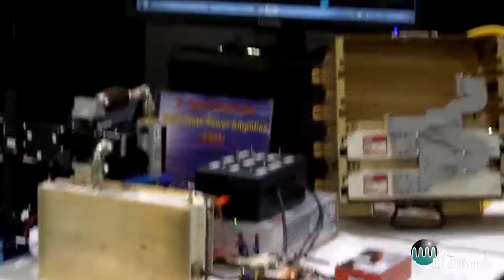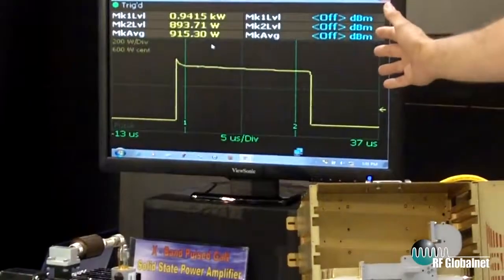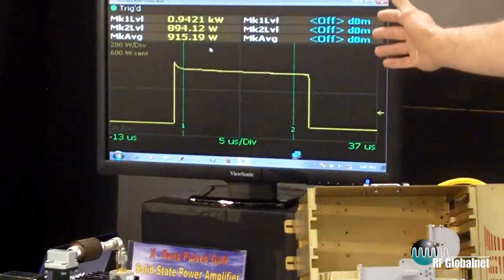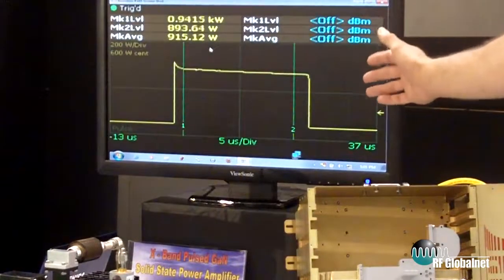We're showing the output power with the droop at 25 microsecond pulse width, and we'll do up to 100 microseconds at 10% duty.